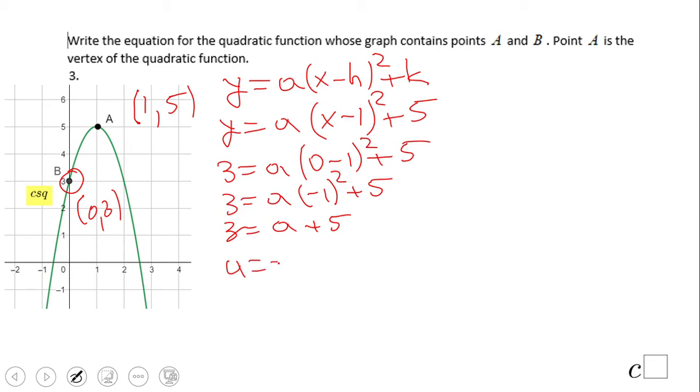And we get negative 2. Like I said, we should expect that because it's an upside down parabola. The final form will be y equals -2(x - 1)² + 5. And that's it.